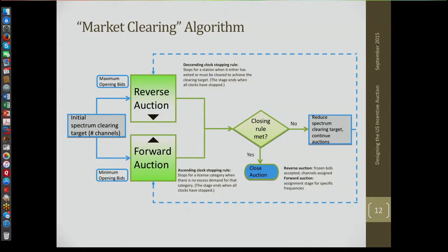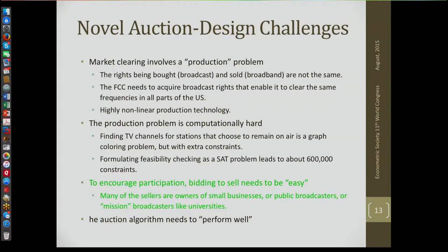The actual process looks similar — this is from the FCC's notice. There's a reverse auction in which prices fall and a forward auction in which prices rise. But there are different prices for different stations in different parts of the country — it's not all one product. We're still trying to clear some number of channels in San Francisco, Chicago, Los Angeles, New York, Boston, everywhere. There's a cost associated with the reverse auction and revenue associated with the forward auction, and the concept is exactly as I just described.